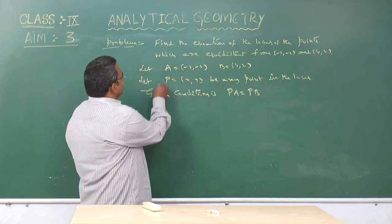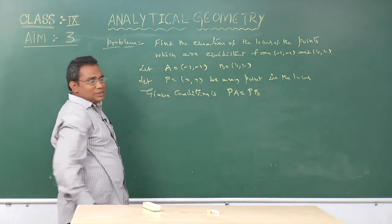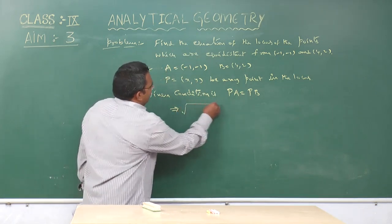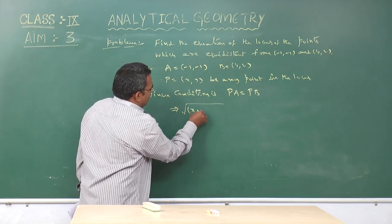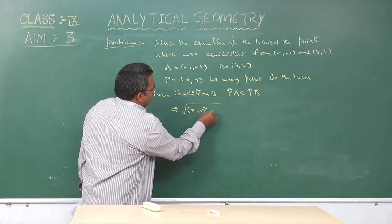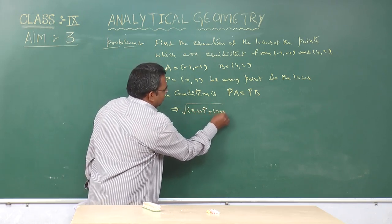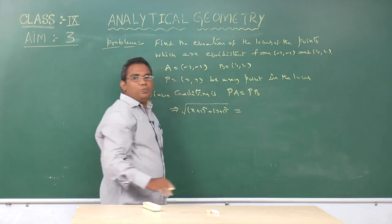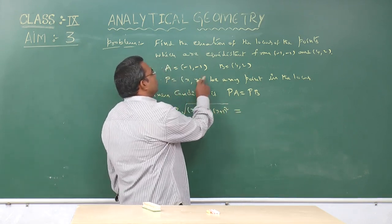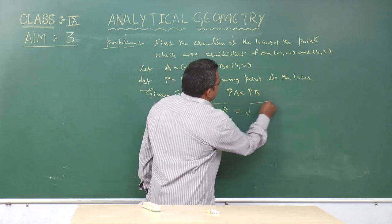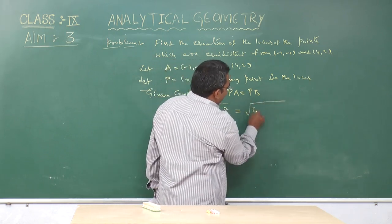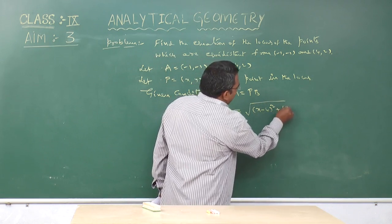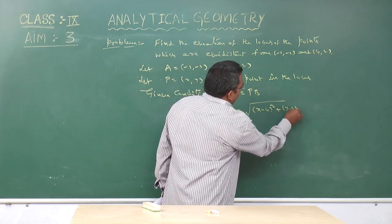PA means the distance between these two points, that means square root of (x+1)² plus (y+1)² equals PB, which means the distance between P and B, that is square root of (x-4)² plus (y-2)².